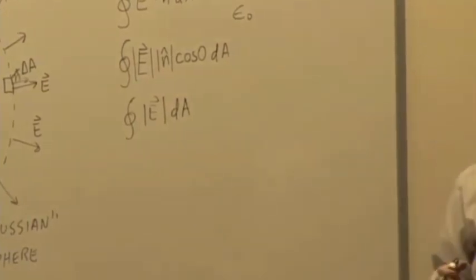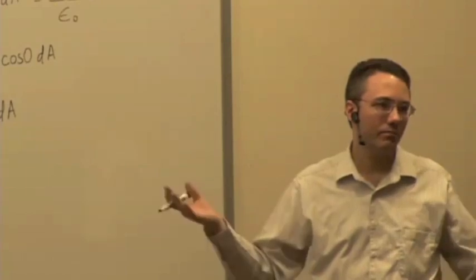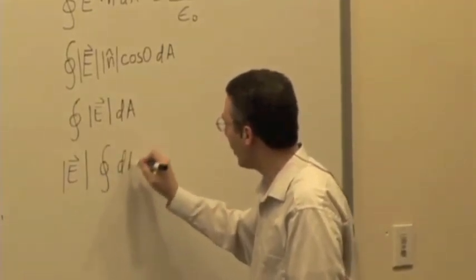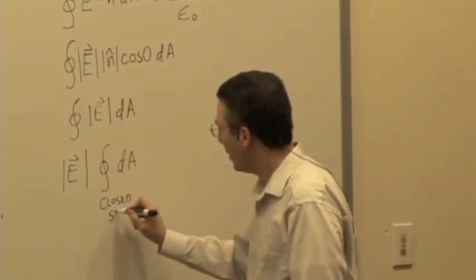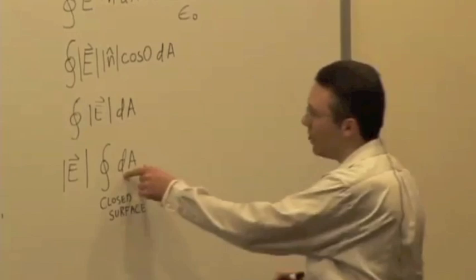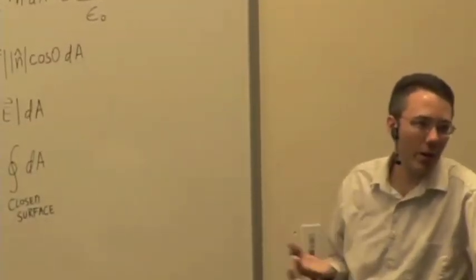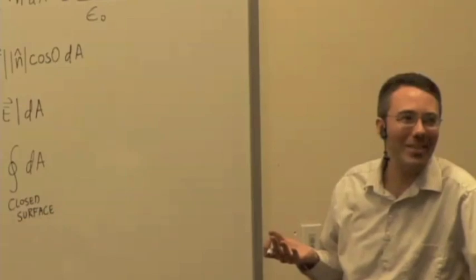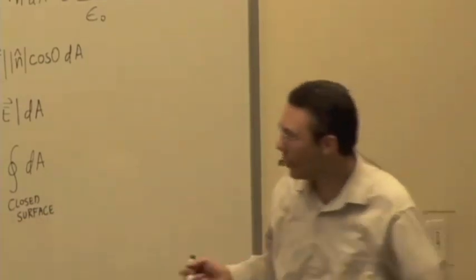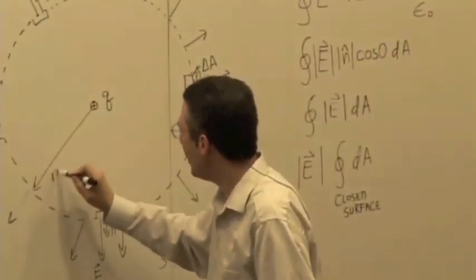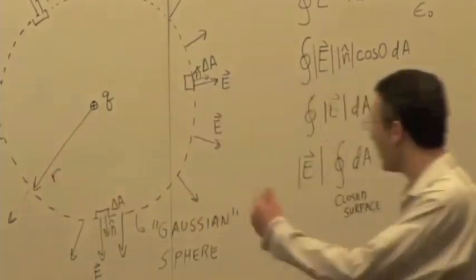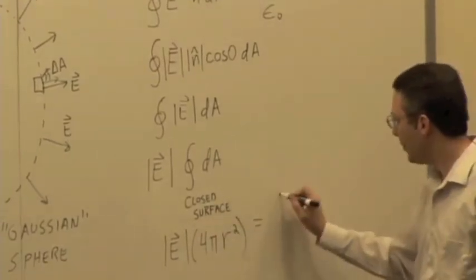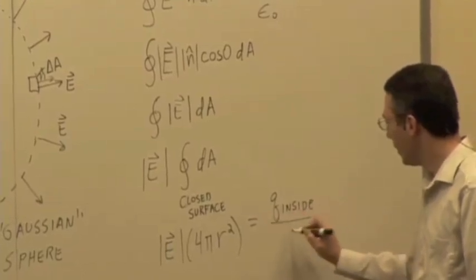But what did we just say about the magnitude of the electric field over the entire surface? It's uniform. So if it's a constant, I can bring it out of the integral. This boils down to an integral over a closed sphere of dA — we're just summing up all the area elements. If you sum up all the little pieces of area over a closed sphere, you get the surface area of a sphere: 4π R squared, where R is the radius of the sphere. So we get the electric field times 4π R squared equal to the charge inside divided by epsilon-naught.